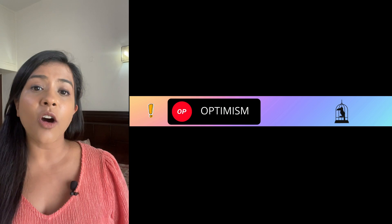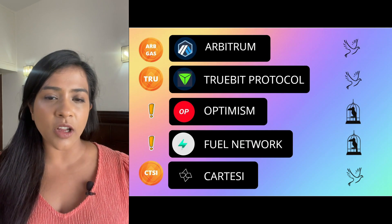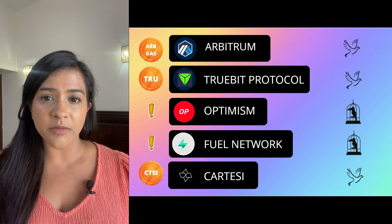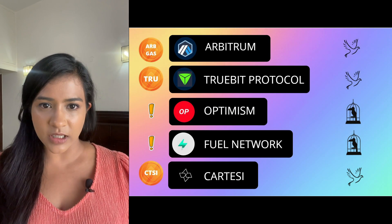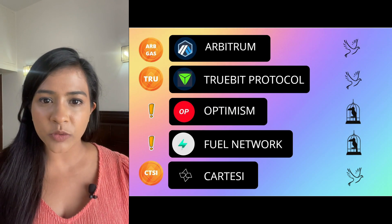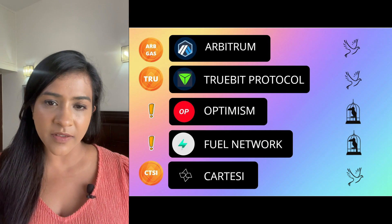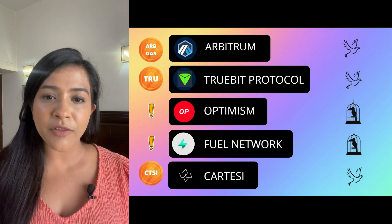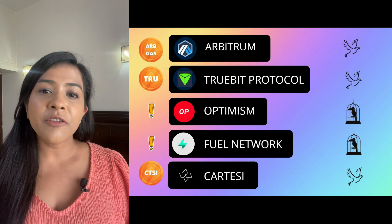As for projects using optimistic rollups, these are Optimism, Arbitrum, TrueBit Protocol, Fuel Network, and Cartesi. Of these, only Arbitrum and TrueBit Protocol have been launched on the mainnet; Optimism should be launching soon. Both Arbitrum and Optimism do not have a token yet. They are quite similar, with one key technical difference: Arbitrum, like TrueBit Protocol, seeks to find a single point of disagreement between solvers and verifiers and then have it checked on the main chain.